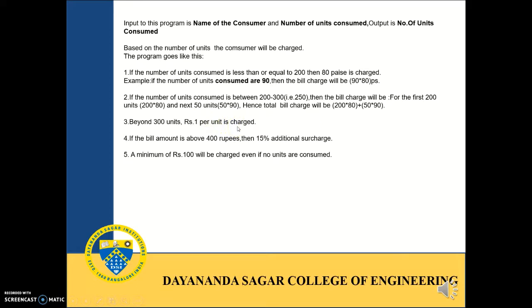If the bill amount is above 400 rupees, then the customer has to pay an additional surcharge of 15 percent. Even if the consumer does not consume electricity and the number of units consumed is equal to 0, even in that case the person has to pay a minimum of 100 rupees.